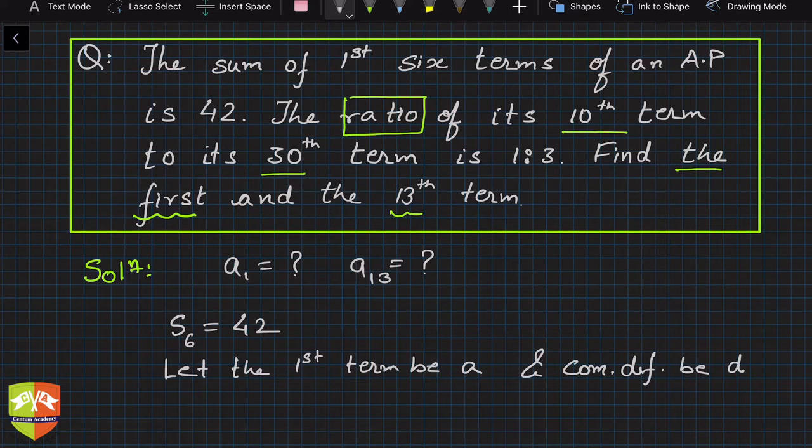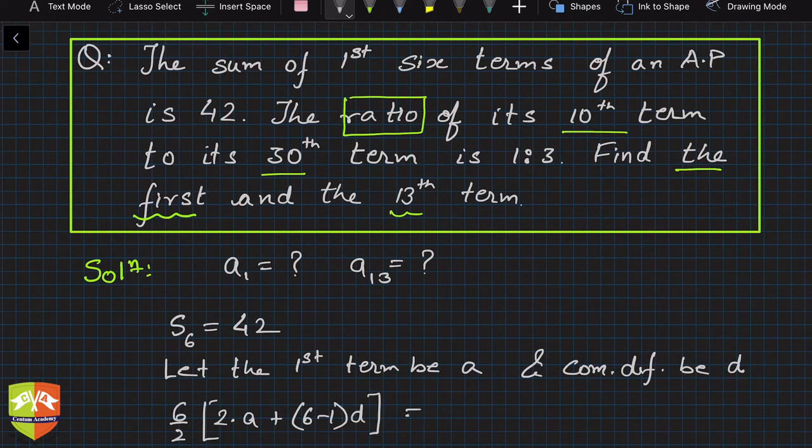So S₆ can be written as by our formula. We know S₆ is 6/2, that is n/2 times 2 times first term, that is a, plus 6 minus 1 times d. This is 42, correct. This information is given as 42.